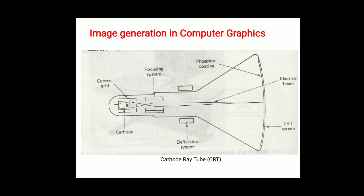For image generation in computer graphics, we use a CRT — cathode ray tube. The CRT uses a phosphorus coating on the screen; an electron beam strikes the screen to produce images from the given input. This is used in CAD systems for displaying output from the design workstation.